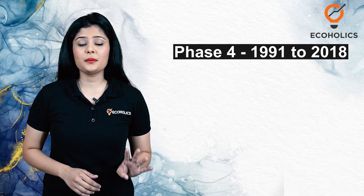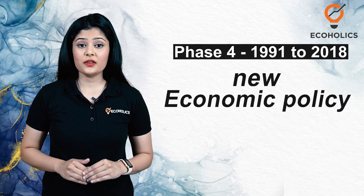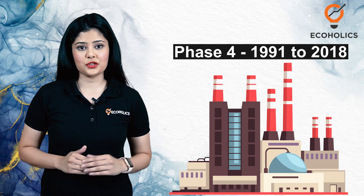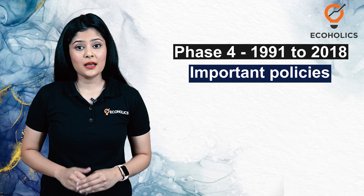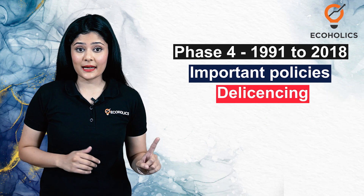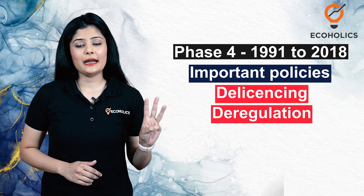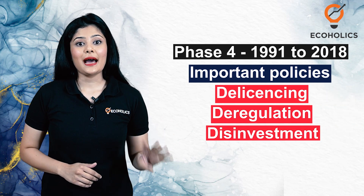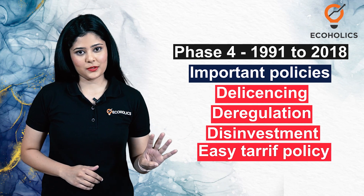Phase 4 marked the beginning of the new economic policy with respect to the industrial sector. Important policies such as de-licensing, deregulation, disinvestment, and easy tariff policy were introduced.